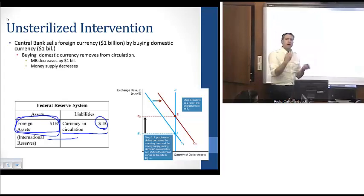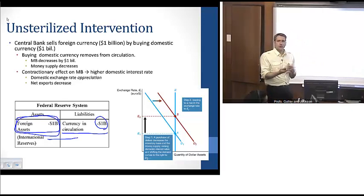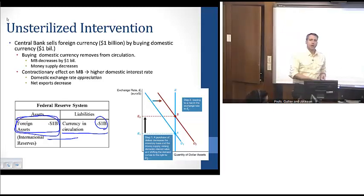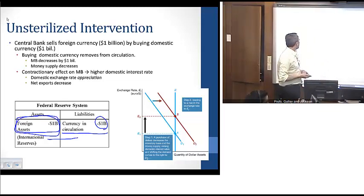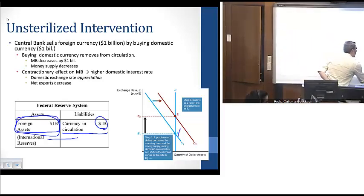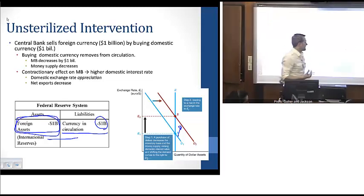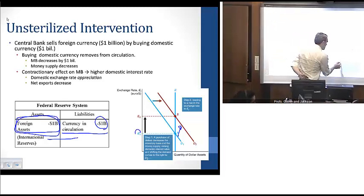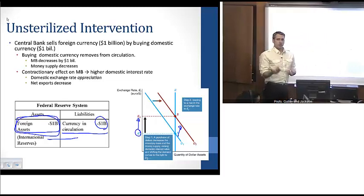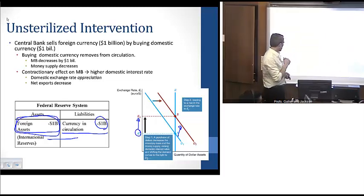As a result of the multiplier process, the decline in the monetary base results in a decline in the money supply, which is contractionary. With this contractionary policy in foreign exchange markets, domestic interest rates are going to rise. That results in an appreciation of the domestic exchange rate — we see an increase in demand for domestically denominated assets — and that results in a decline in net exports.